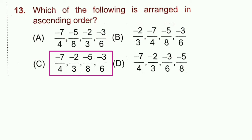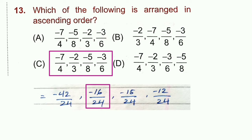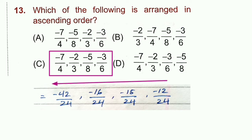Question 13: Which option shows numbers arranged in ascending order? For option C: −7/4, −2/3, −5/8, −3/6. Converting to common denominator 24: −42/24, −16/24, −15/24, −12/24. For negative numbers, the more negative value is smaller. Ascending order: −42 < −16 < −15 < −12. Option C is correct.